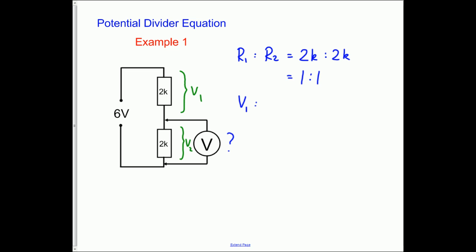So therefore the ratio V1 to V2 is also 1 to 1 and therefore V2 the one we're looking for is simply 3 volts. V2 must be 3 volts here and V1 must be 3 volts here. The resistors are the same so the voltages must be the same, and they must add up to 6 volts. 3 and 3, 6 volts.